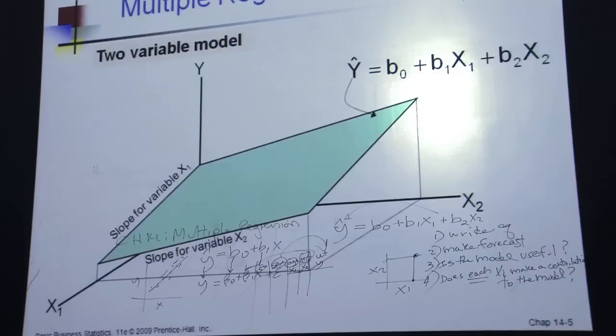But of course, when you go beyond three variables or beyond two x's, you can't even make a picture. And the b1 and the b2 are slopes, but what do we call that? Remember, if you take a straight line, which is in two dimensions, and you try to extend it into three dimensions, what do you get? You get a plane, right?